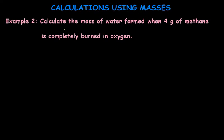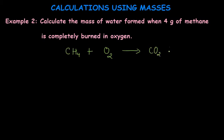Let's see another example: calculate the mass of water formed when 4 grams of methane is completely burned in oxygen. First we write the equation: CH₄ plus O₂ gives CO₂ and H₂O. Now we balance it. Carbon is 1 on both sides, so that's fine. Hydrogen is 4 on the left but 2 on the right, so we add 2 in front of H₂O. This makes oxygen 4 total, so we add 2 in front of O₂. The equation is now balanced.